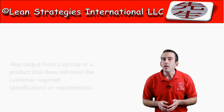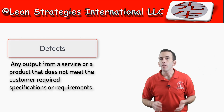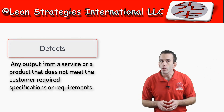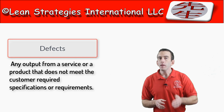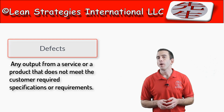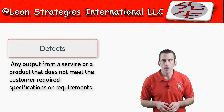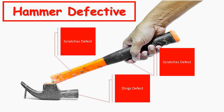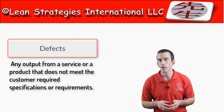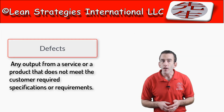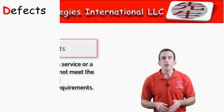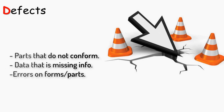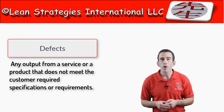The next type of waste is defects. A defect is any output from a service or product that does not meet the customer's required specifications. A defect is not the same as defective — there may be more than one defect in a defective product or process. Some examples of defects are parts that do not conform to customer requirements, data that is missing information, and errors on forms or parts.